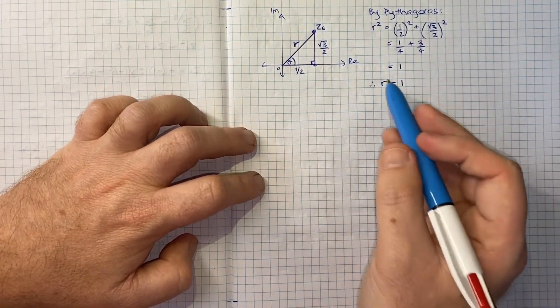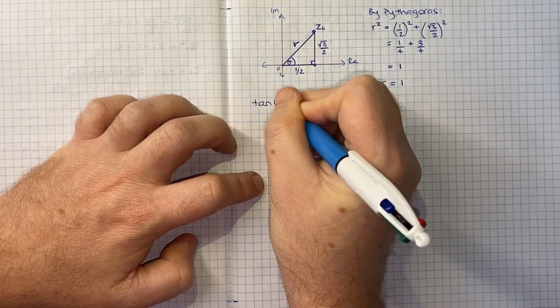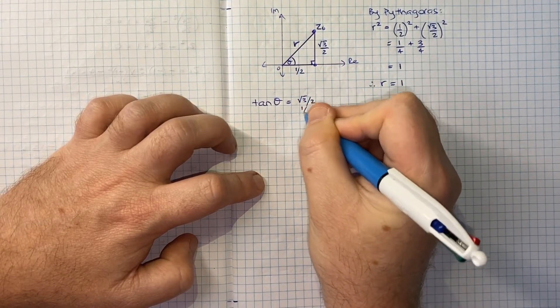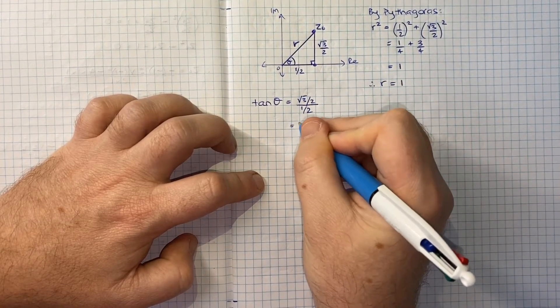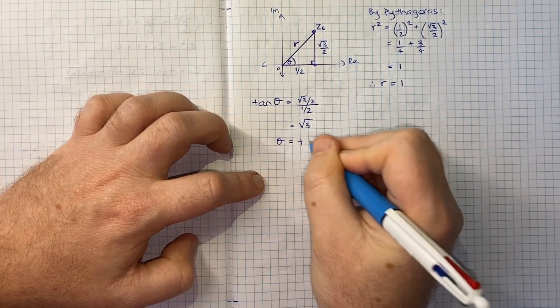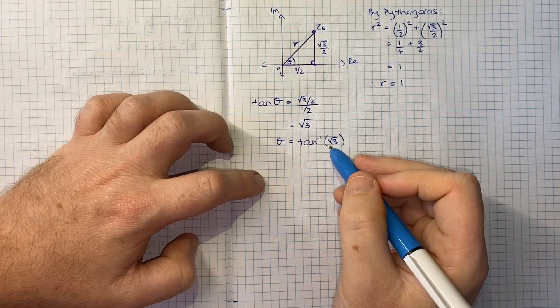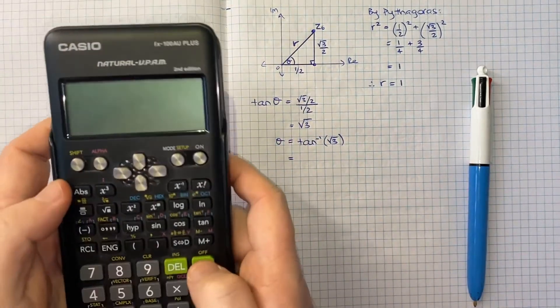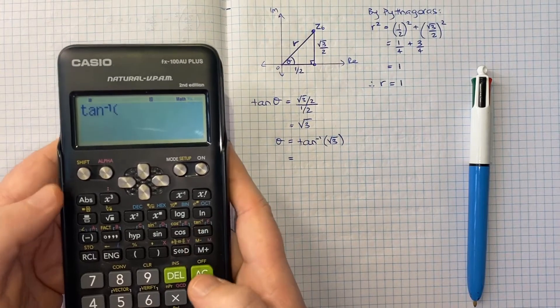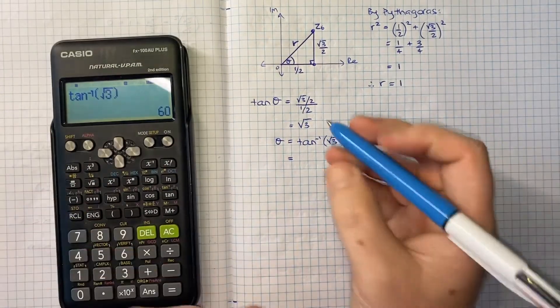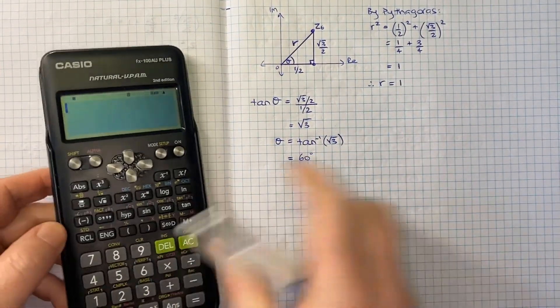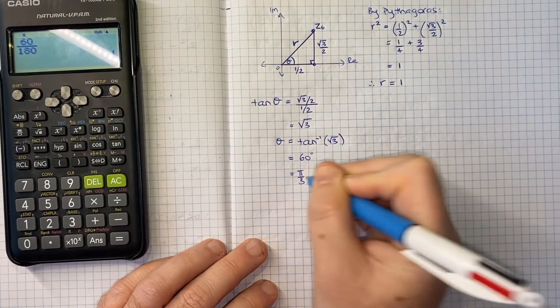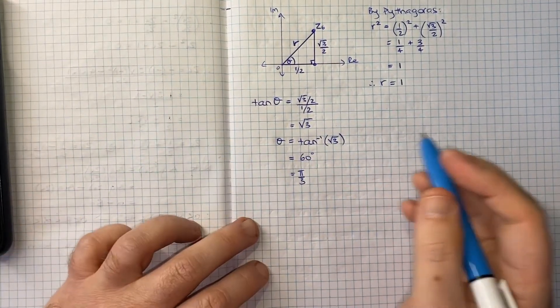Now if we think about our theta, using right-angled triangles, we could say that the tan of our angle theta would be opposite over adjacent, so it'll be root 3 over 2 divided by 1 over 2, and these 2s would cancel to give us just root 3. Therefore theta is the inverse tan of root 3. If you've memorized your triangles you'd probably know, but if you haven't, you can just get your calculator and find out the inverse tan of the square root of 3, and that's going to tell you it's 60 degrees. If you want it in radians, you'd just go 60 over 180 and you'd get pi over 3.